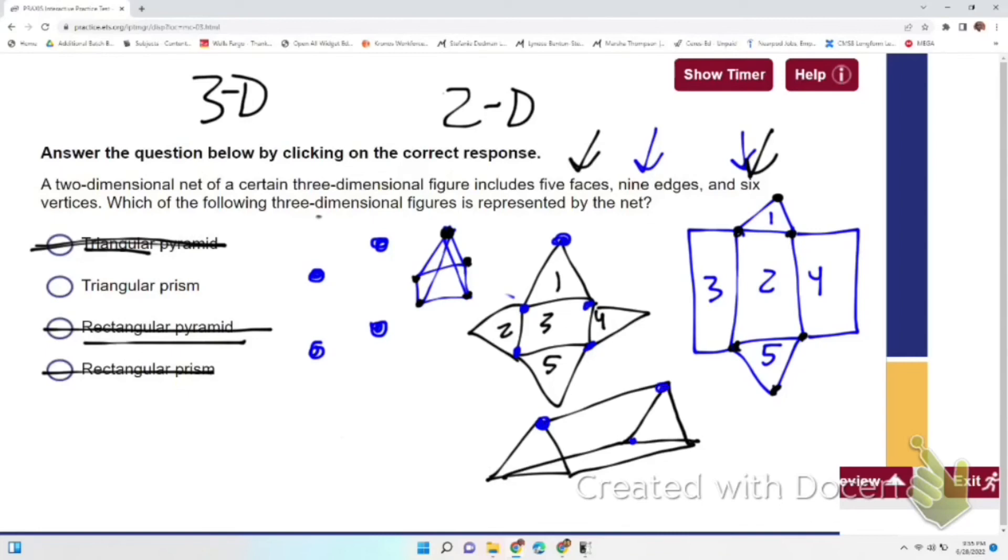They're the sharp parts or the points on these 3D figures. So that has six vertices, so that's why we're going to go with answer choice two as our answer.